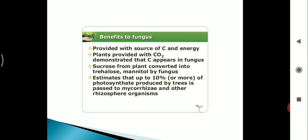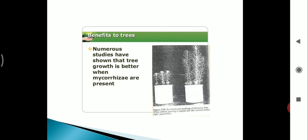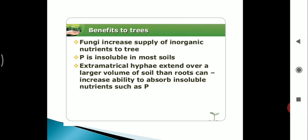Next, benefits to fungi. It provides the fungus with sources of carbon and energy. Plants provide carbon. Studies demonstrate that carbon appears in fungus. Sucrose from plant is converted into trehalose and mannitol by fungus. It's estimated that up to 10% of photosynthate produced by trees is passed to mycorrhizae and other rhizosphere organisms. Numerous studies have shown that tree growth is better when mycorrhizae are present. Fungi increase supply of inorganic nutrients to trees. Phosphate is insoluble in most soils.